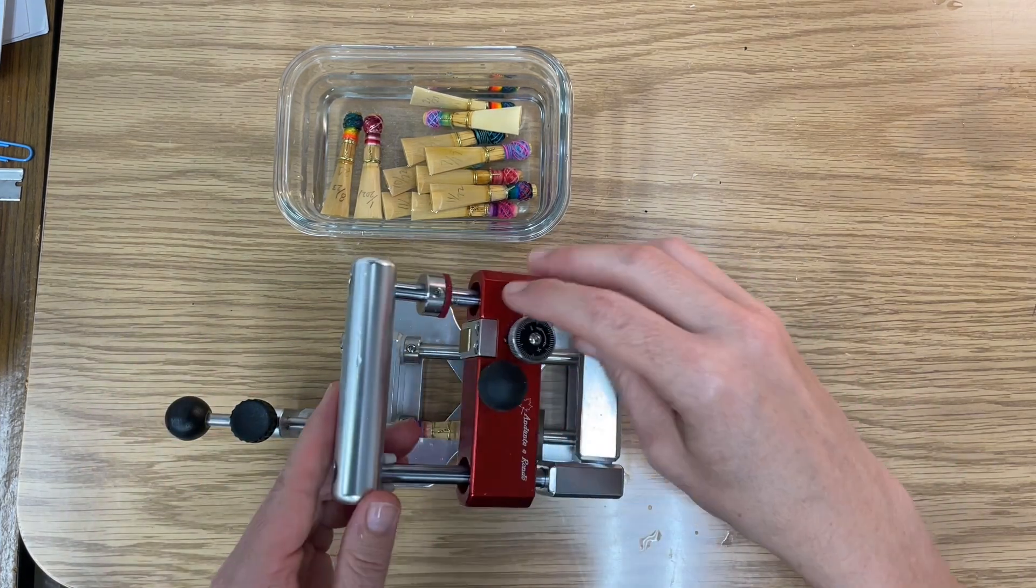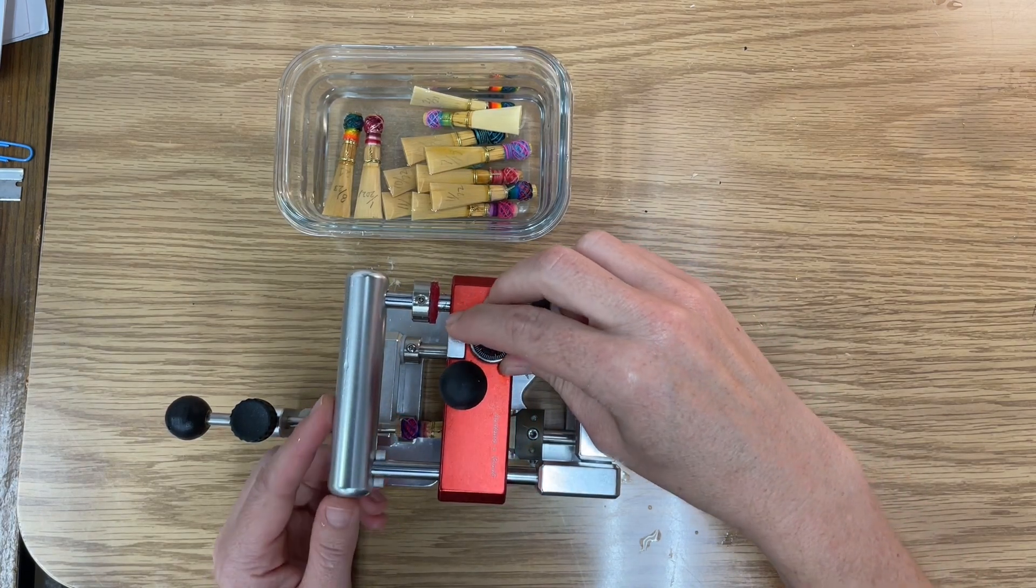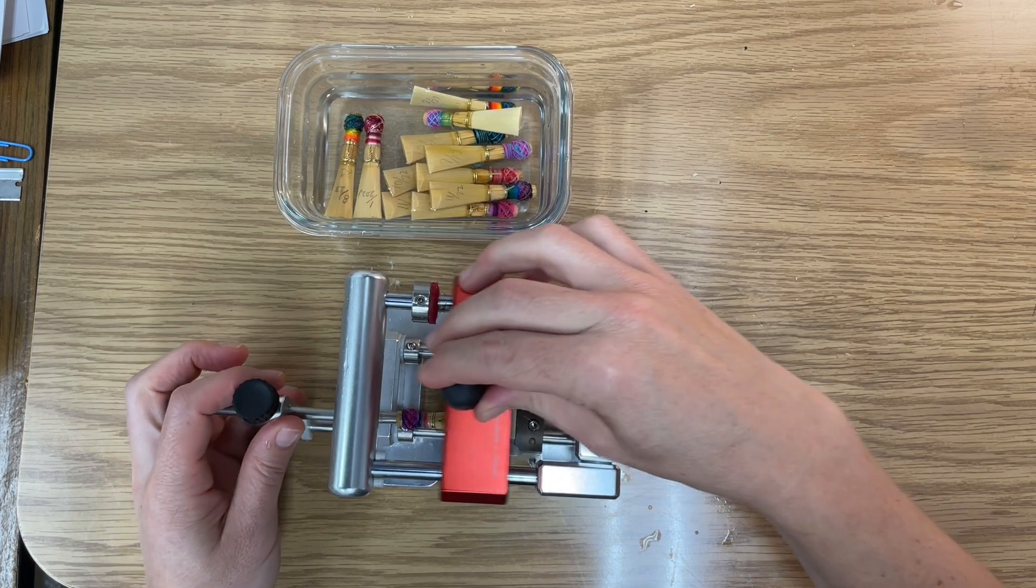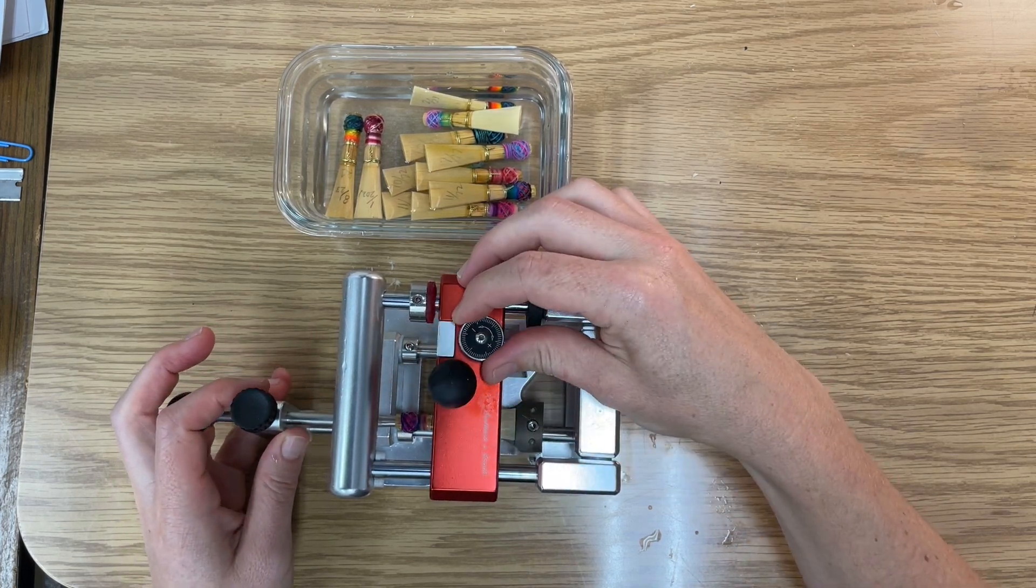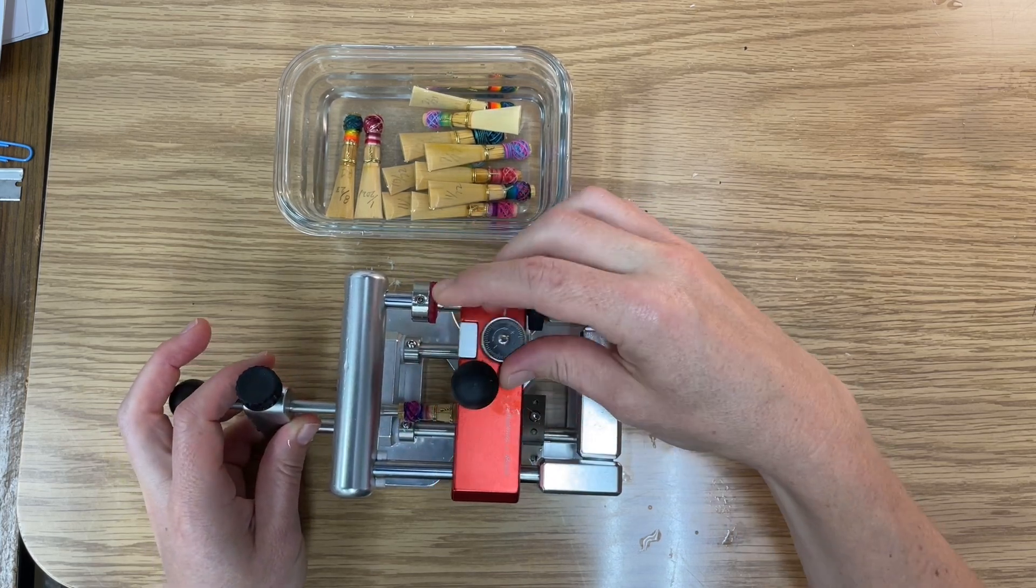Now when we put the carriage down, we're going to make sure that we make it a little bit higher because we want to just take off a little bit at a time. So right now it's not taking any off, so I'm going to turn this towards the minus sign until it takes just a little bit of cane off.